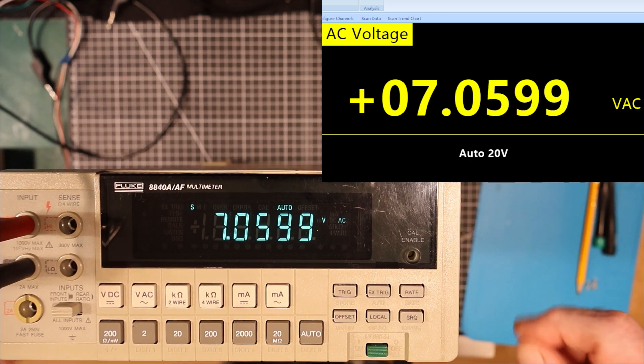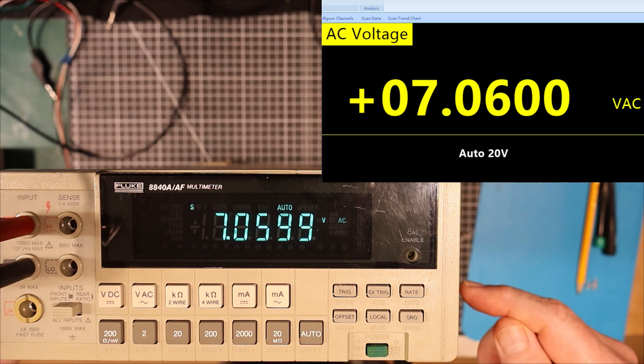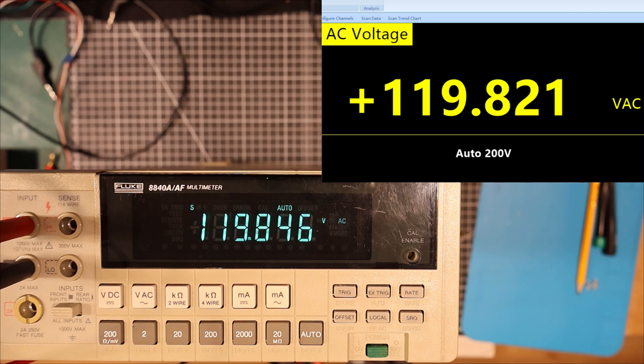Before I get into it and start tweaking things, I'm going to have to find some way of determining which one is the most accurate. So let's try the mains here and see what comes up. They're flipping around a little bit back and forth there. Of course, the mains is not 100% stable at any given time, but they seem to be tracking each other pretty well. But anyway, that's close enough for me.